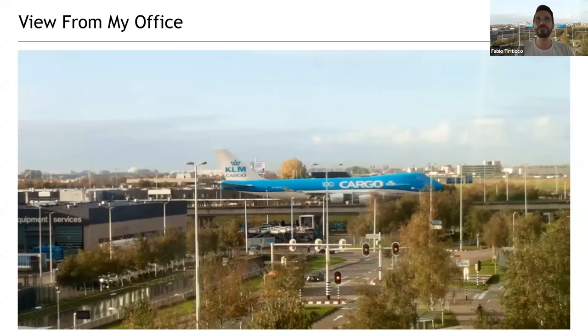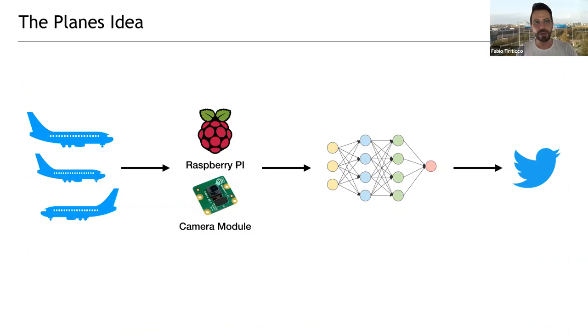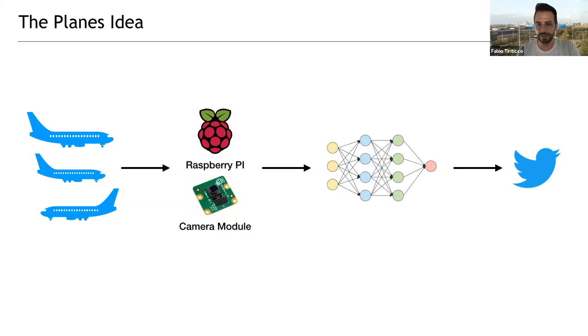You can see a massive plane peacefully taking a stroll just maybe five meters above those little tiny cars and humans. My excitement every time I saw a plane like this from the window was just so big that I decided to do something with it. The idea at the base of this talk: I wanted to learn about AI, so I'm going to put a Raspberry Pi with a camera next to the window, take pictures, and train a neural network to tell me if there is a plane on the bridge or not. If there is one, I'll tweet about it.